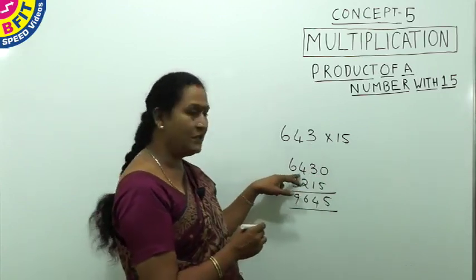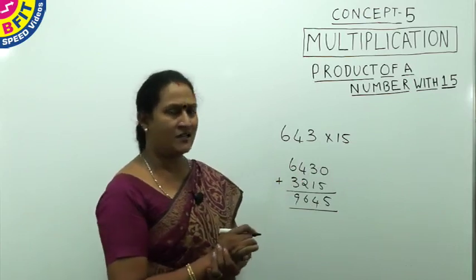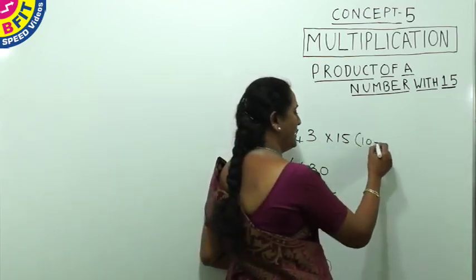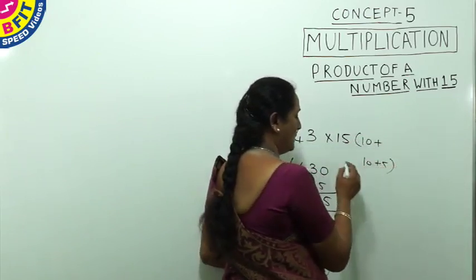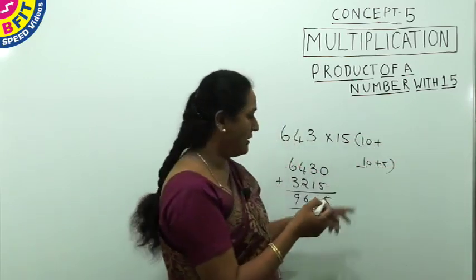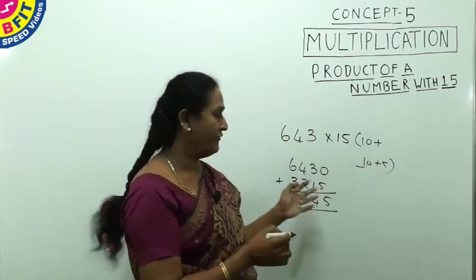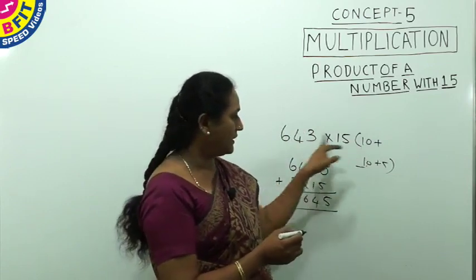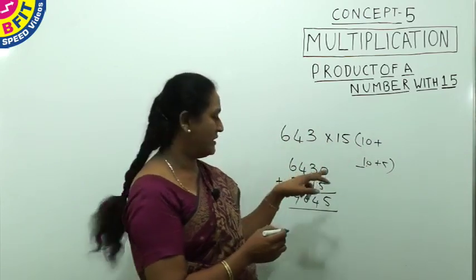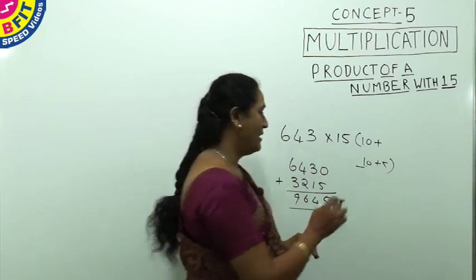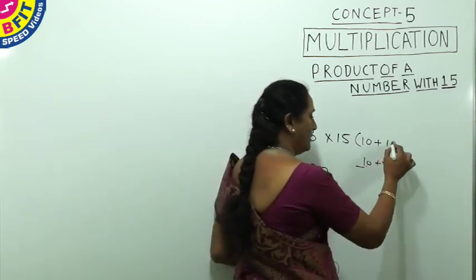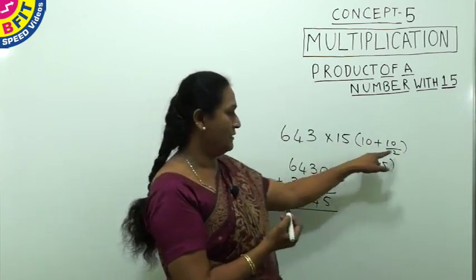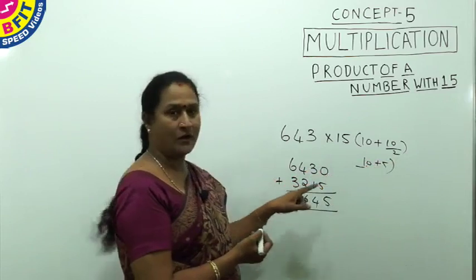The logic here is that 15 equals 10 plus 5. So we multiply the number by 10 (by adding a zero), then multiply by 5. Instead of multiplying by 5 directly, we take half of the zero-added number — since 10 divided by 2 is 5 — and that gives us the product with 5.